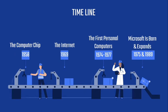In 1958, there is the invention of the computer chip. Jack Kilby and Robert Noyce invented the integrated circuit, better known as the computer chip. In 1969, there is the invention of the internet. The first internet was called ARPANET. The original internet wasn't used very widely because not many people had access to it.